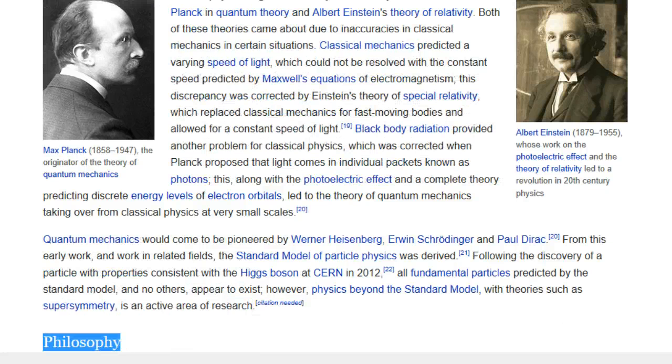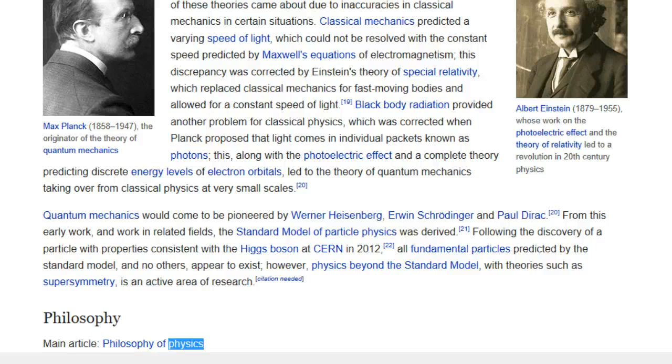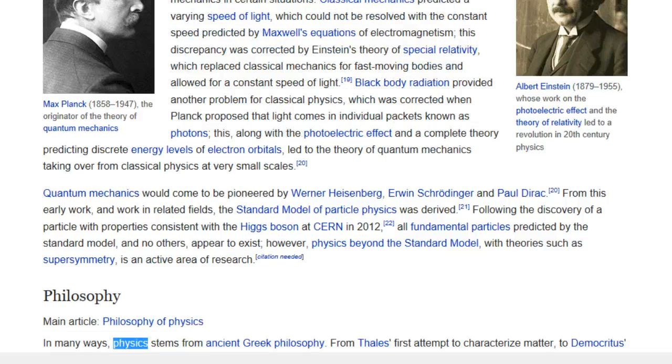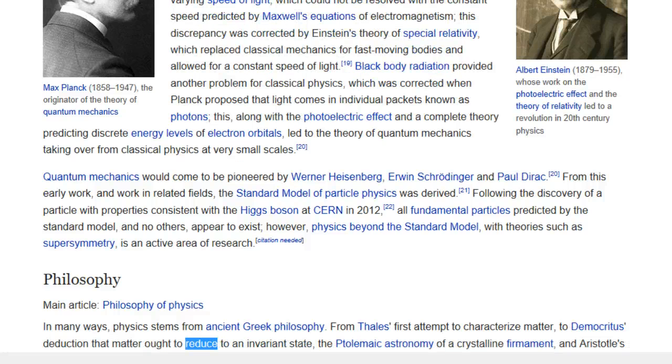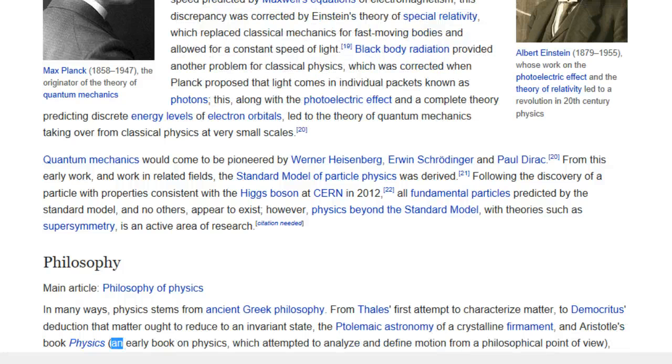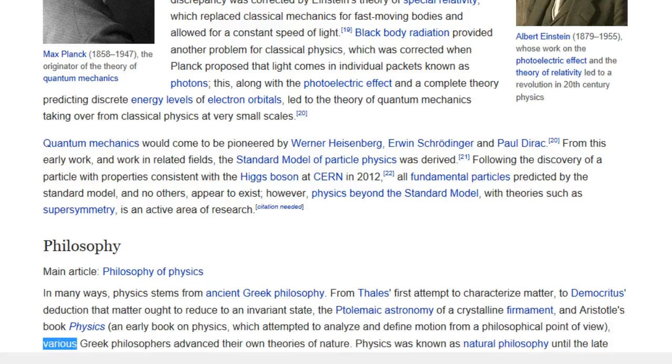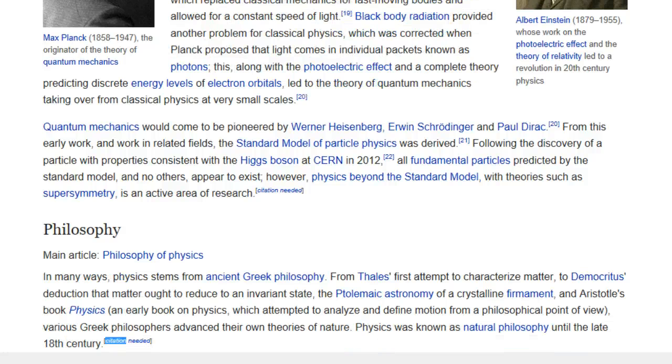Philosophy. Main article, Philosophy of Physics. In many ways, physics stems from ancient Greek philosophy. From Thales' first attempt to characterize matter, to Democritus' deduction that matter ought to reduce to an invariant state, the Ptolemaic astronomy of a crystalline firmament, and Aristotle's book Physics, an early book on physics, which attempted to analyze and define motion from a philosophical point of view, various Greek philosophers advanced their own theories of nature.